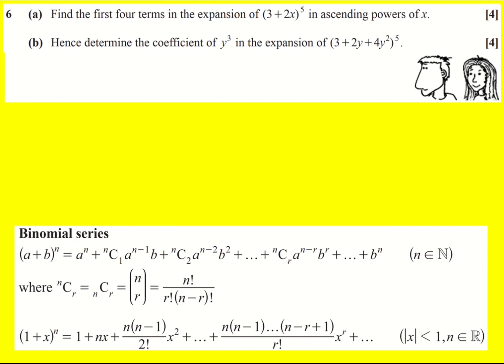So a is going to be 3, b is 2x, and n is 5. Off we go: it's 3^5 plus 5C1 times 3^4 times 2x. You just decrease the power of 3 each time and increase the power of 2x.